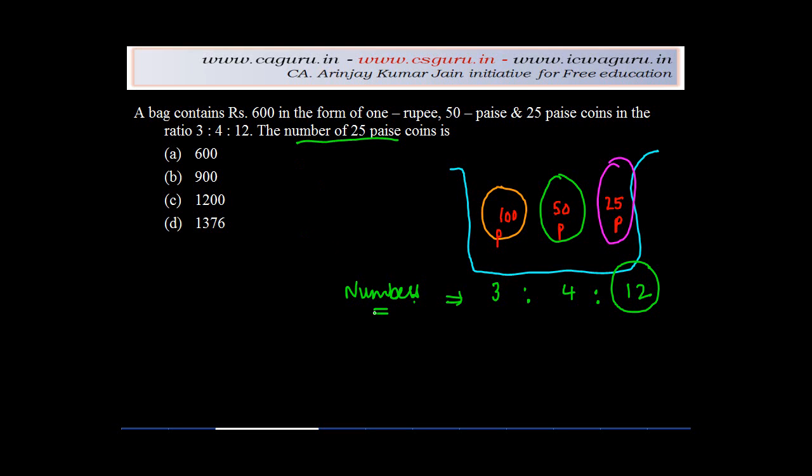Now you know the number of coins which are there. But this number is not comparable. Why? Because the values are different. So 3 coins of 100 paise each will have a value of 300 paise. 4 coins of 50 paise each will have 200 paise as value. Whereas 12 coins of 25 paise each will have 300 paise as value. So this ratio is not comparable.